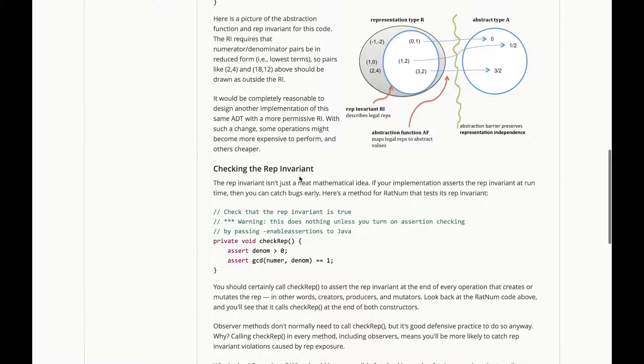Now, the rep invariant isn't just a neat mathematical idea. If your implementation asserts its rep invariant at runtime, then you can fail fast. You can catch bugs earlier.